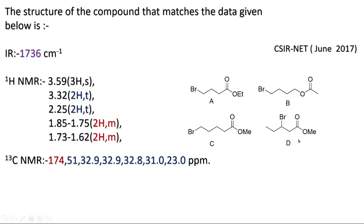If you want to see how multiplets are generated, you can see video number 10. Now if you see this molecule, we don't have any one-hydrogen multiplet in the NMR signal, so we can eliminate option D very easily.